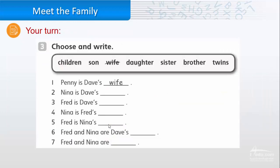Let's complete the sentences. Here we have the words children, son, wife, daughter, sister, brother, and twins. One, Penny is Dave's wife. Two, Nina is Dave's daughter. Three, Fred is Dave's son.